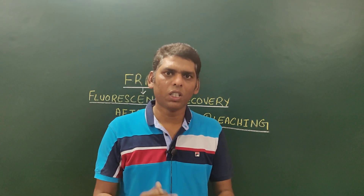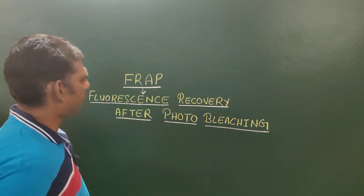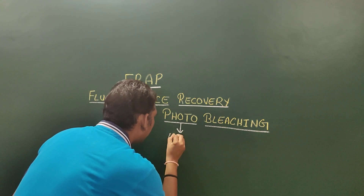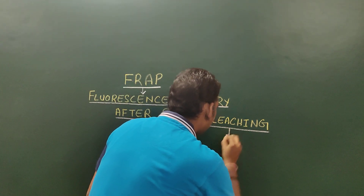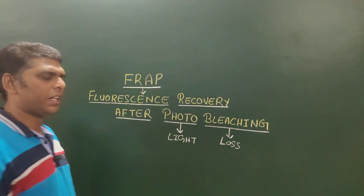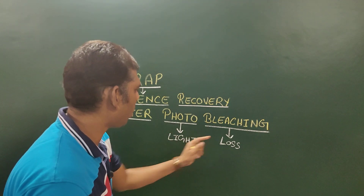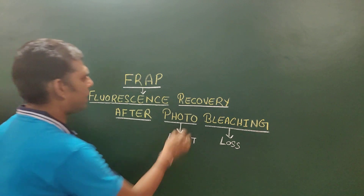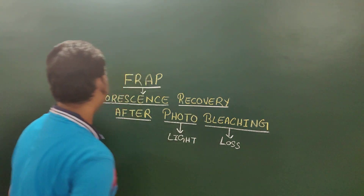The full form of FRAP gives you an idea about what FRAP means. In the full form, 'photo' stands for light and 'bleaching' stands for loss. So it means if we use light to bleach — that is, to cause loss of the fluorescence property of a fluorophore — then that fluorescence is recovered after some time.